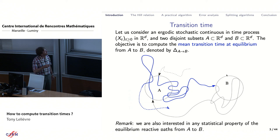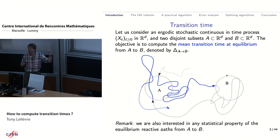This means that the process will necessarily visit these two sets infinitely often. So in other words, the process coming from B — shown as a dashed line here — will go into A, make some loops around A, then go into B, spend some time around, before going back to A, et cetera. The blue parts of these trajectories are called the transition path.